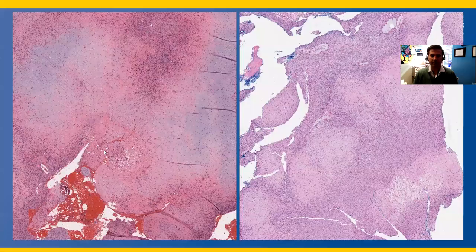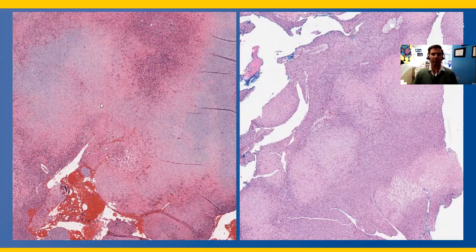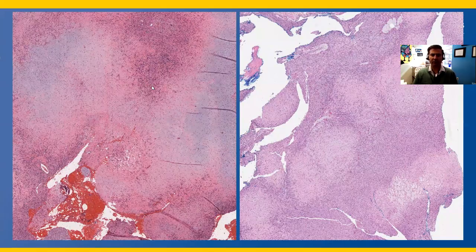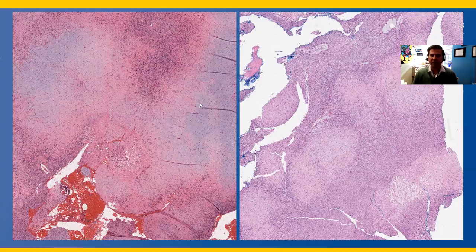Tissue was obtained. Here we have a low-to-intermediate-power lobular architecture with hypocellular areas and condensation around the edges in a really prominent lobular pattern, which is a helpful clue to this diagnosis. The background stroma is chondromyxoid — meaning blue and somewhat fibrous, meaning pink — with this macro-lobular pattern.